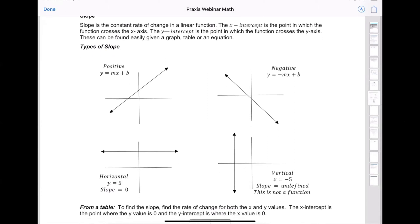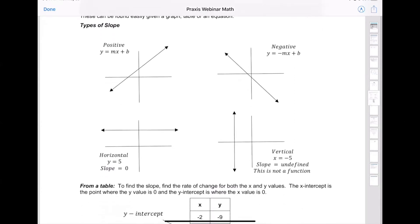This right here is showing us a positive slope. How do I know it's positive? Well, just like you read, always read your graphs from left to right. So if I start here and go left to right, you can see that it's going up. As it goes up, that's positive—associate up with positive.